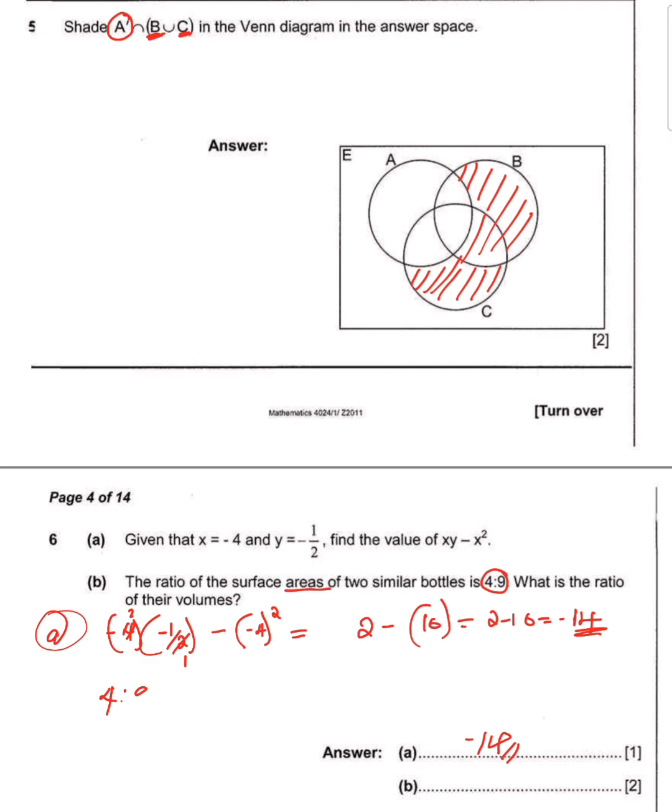Ratio of areas is 4:9. Before you find the ratio of volumes, step one is find the ratio of sides. How to do that? You square root to find the ratio of their sides. So this is the ratio of sides.